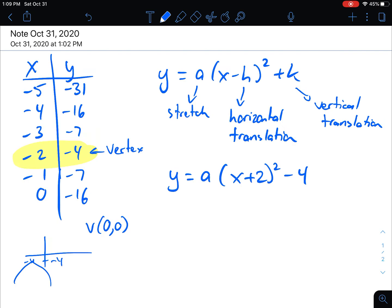So that means it moved left 2, down 4. If it's going to go left 2, you have to put x plus 2 in the brackets. If you go down 4, you put minus 4 at the end. So this is two-thirds of my equation.